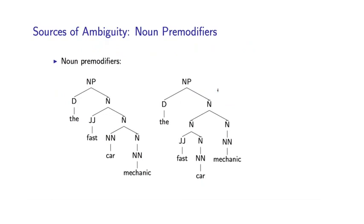So let's move on to another example of ambiguity using the grammar I just showed you. And this concerns noun pre-modifiers. So I think earlier in these slides, I showed you this structure, or something very similar to this structure. So here we have the sequence of words, the fast car mechanic.